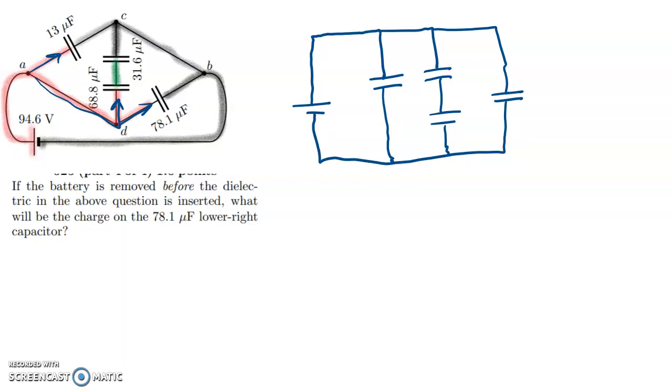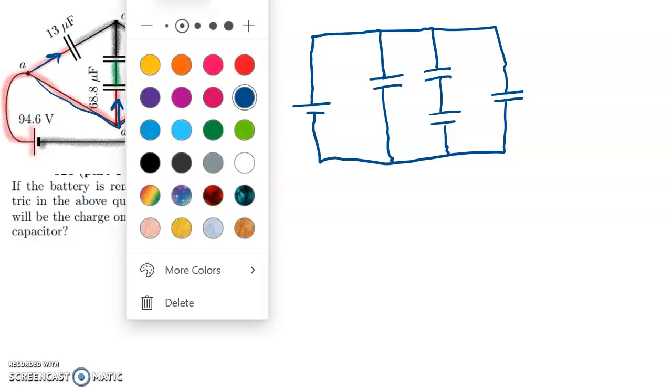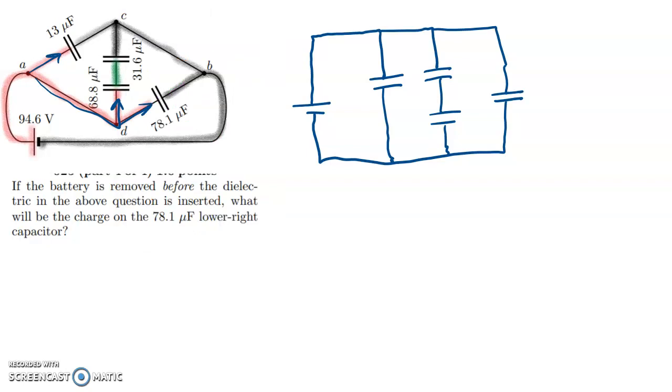And I just think that's a much more clear way of drawing that. Now it's obvious that these three branches are in parallel. These two are in series with each other. Let me just write down the values so it's easier to work with this. So this one is 94.6 volts. This one is 13 microfarads. This one is 31.6 and 68.8 and 78.1.